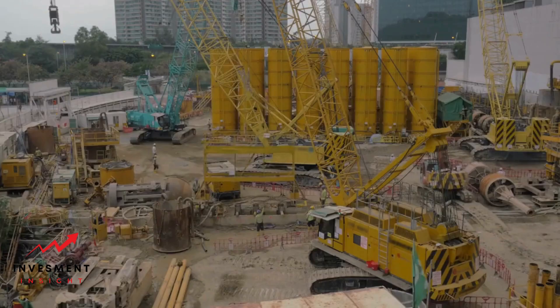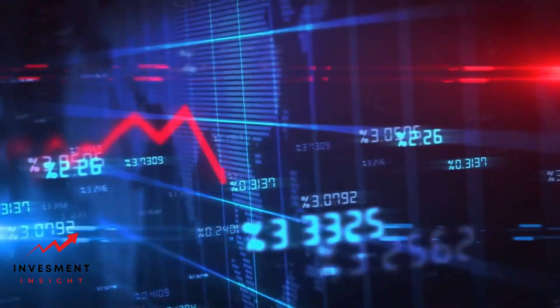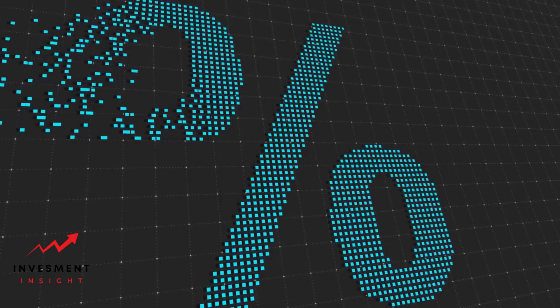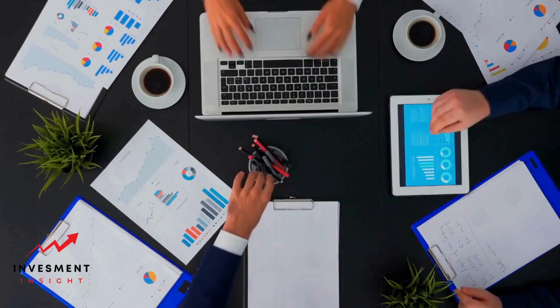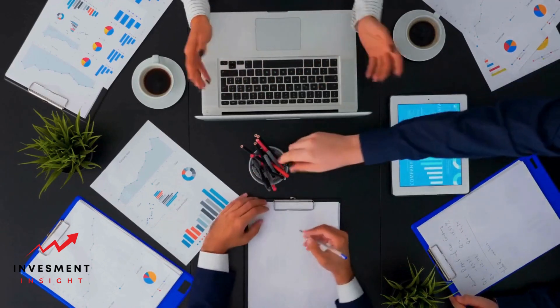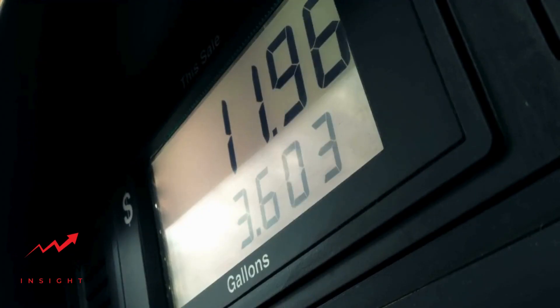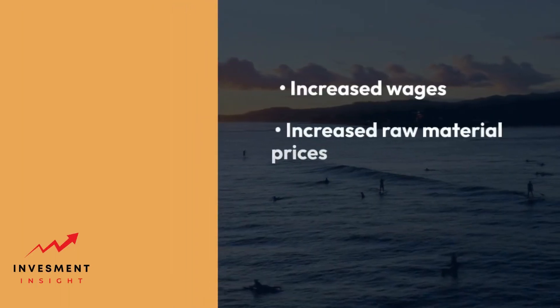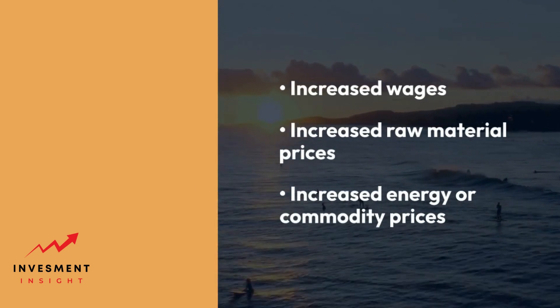Higher production costs can also lead to inflation. This is known as cost-push inflation. When the costs of raw materials, labor, or other production inputs increase, businesses often pass these costs on to consumers in the form of higher prices. Cost-push inflation can be triggered by factors such as increased wages, higher raw material prices, or increased energy or commodity prices.